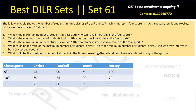The set says that the following table shows the number of students in three classes — 9th, 10th, 11th — for four sports-interested students. Each class has a total of 150 students. Then certain questions are asked about maximum and minimum, with overlapping variables and missing information, which means I'll definitely apply the chocolate distribution method. The total chocolates for 9th class are 325, for 10th class are 295, and for 11th class we calculate the total chocolates in individual classes.